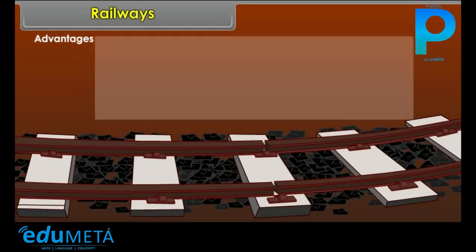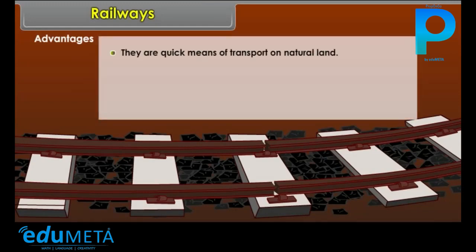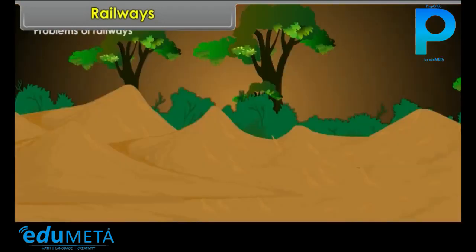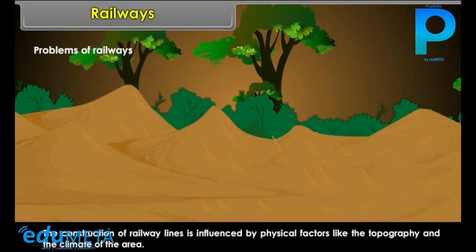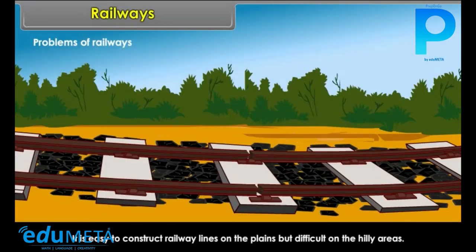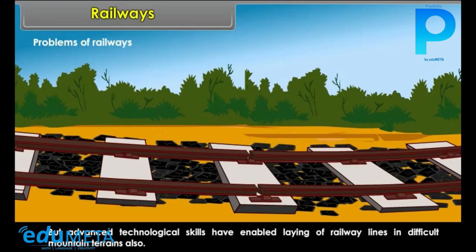Railways — Advantages: They are quick means of transport over land. They can carry more loads in comparison to roads. It is the most convenient long-distance travel. They facilitate the carriage of bulky material in large quantities. Problems of Railways: The construction of railway lines is influenced by physical factors like topography and climate. Due to snow in the Arctic region and heavy rainfall in the equatorial region, the construction of railway lines is difficult. It is easy to construct railway lines on the plains but difficult in hilly areas, though advanced technological skills have enabled laying of railway lines in difficult mountain terrains.